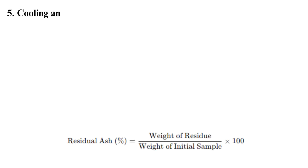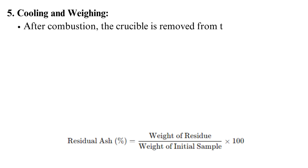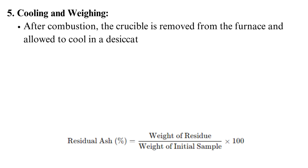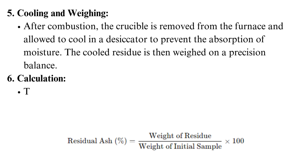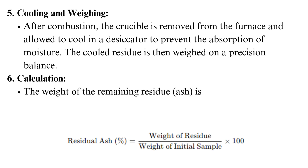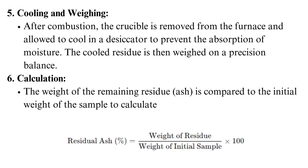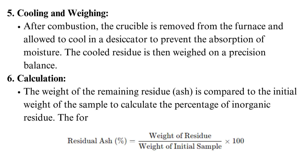After combustion, the crucible is removed from the furnace and allowed to cool in a desiccator to prevent absorption of moisture. The cooled residue is then weighed on a precision balance. The weight of the remaining residue (ash) is compared to the initial weight of the sample to calculate the percentage of inorganic residue. The formula is: weight of residue / weight of initial sample × 100.